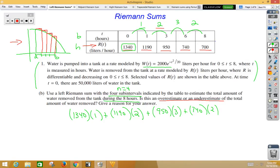And the reasoning behind that, because it says give a reason for your answer, is you would say that because the graph is strictly decreasing, notice it's decreasing every time, a left Riemann sum is an overestimate.